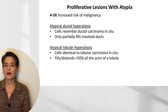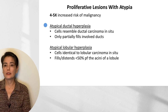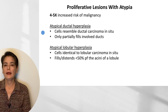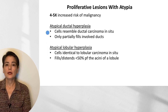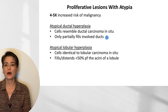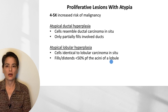The final proliferative lesion we'll discuss in this video is proliferative lesions with atypia, where we're moving up to a four to five-fold increased risk of malignancy. There are two lesions to consider: atypical ductal hyperplasia and atypical lobular hyperplasia. The easiest way to think of these is they are not quite ductal carcinoma in situ and not quite lobular carcinoma in situ — they look like it, but don't have enough extent. Atypical ductal hyperplasia only partially fills the involved ducts, and atypical lobular hyperplasia only fills or distends about 50% of the acini of a lobule, not the entire lobule.